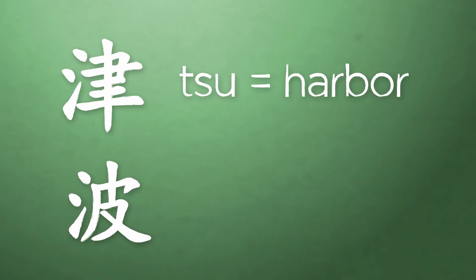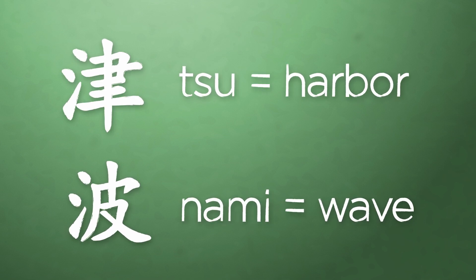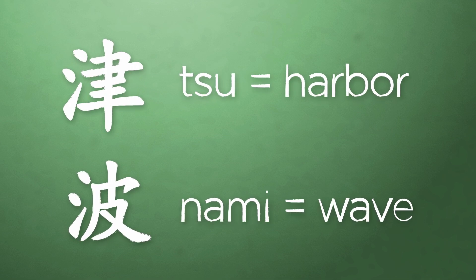The word tsunami actually comes from two Japanese words: tsu meaning harbor and nami meaning waves. Basically when you put them together it means that when these waves hit the harbor, brother, you better get out of there.